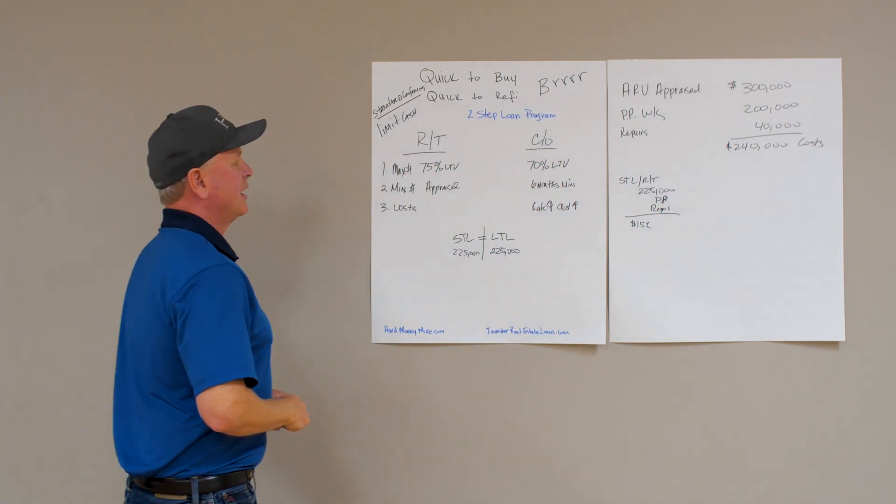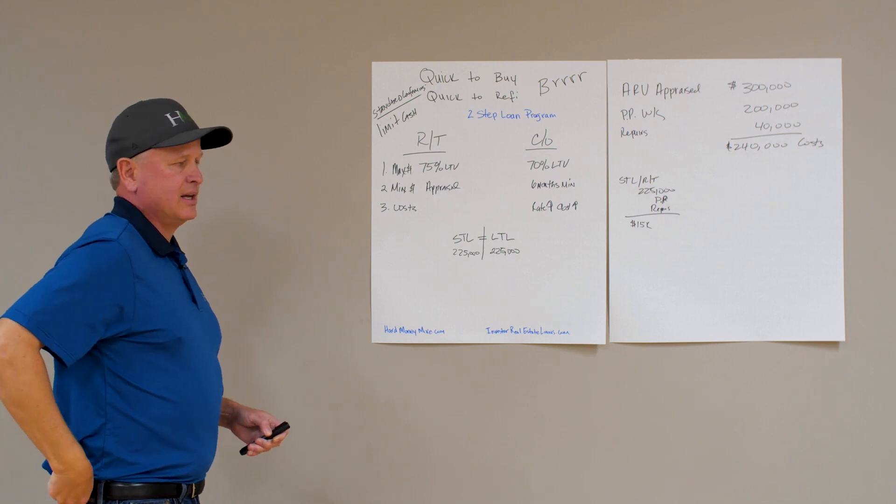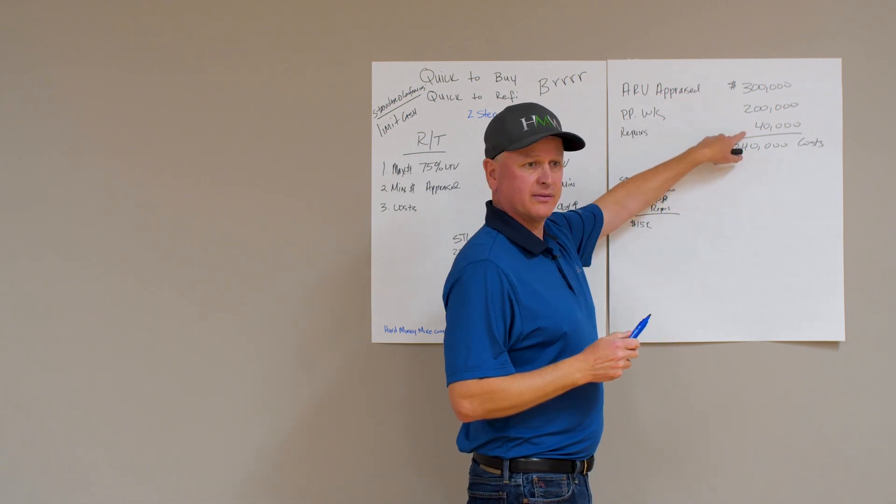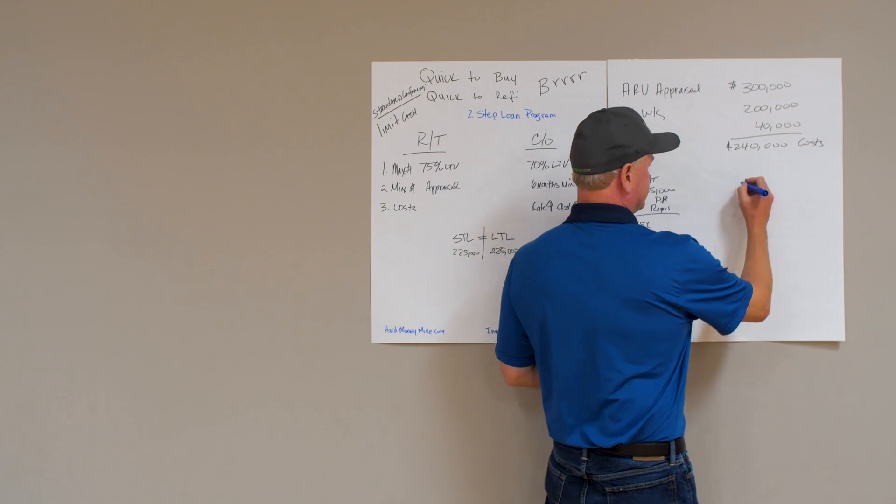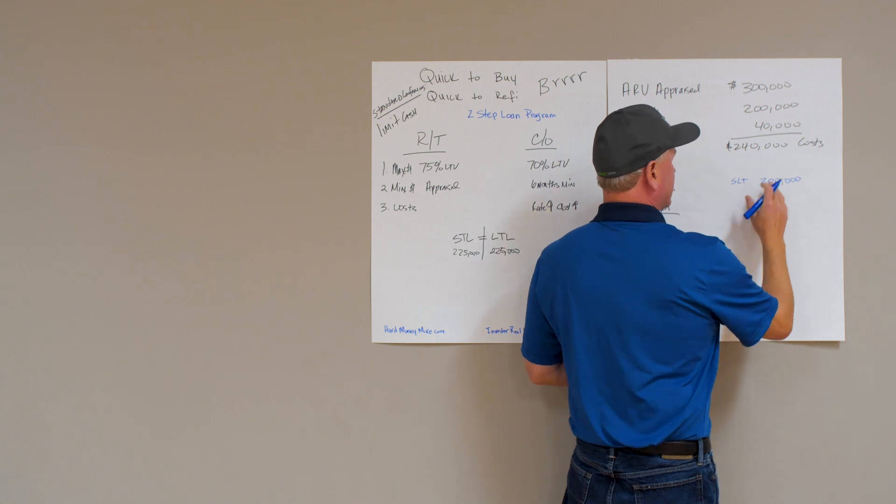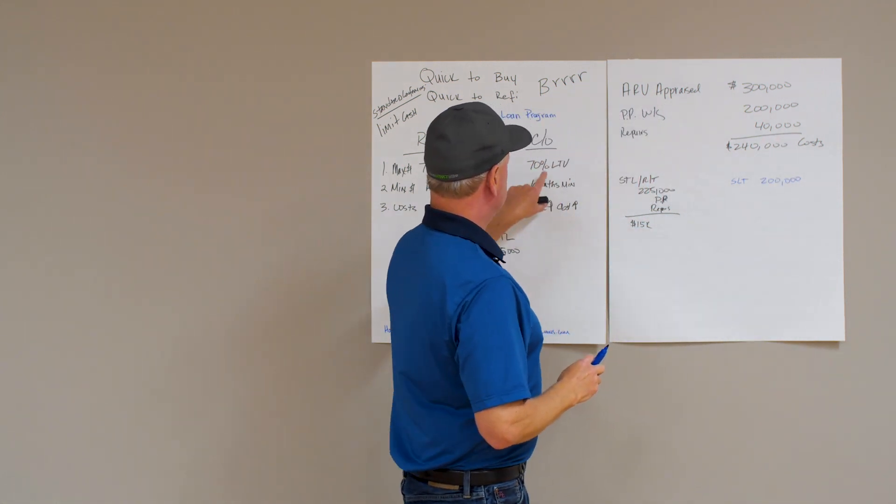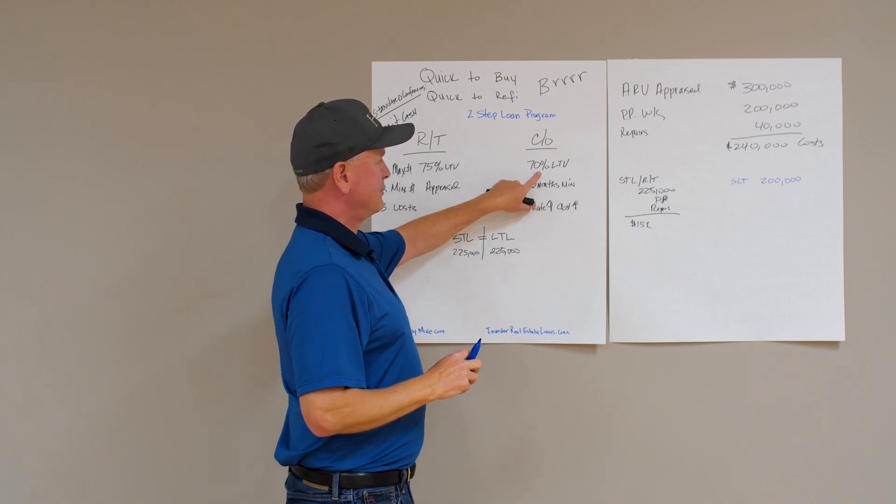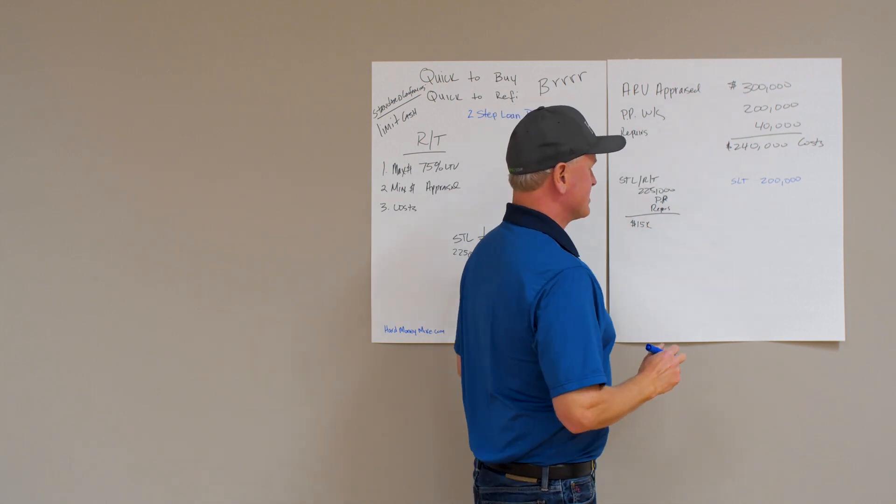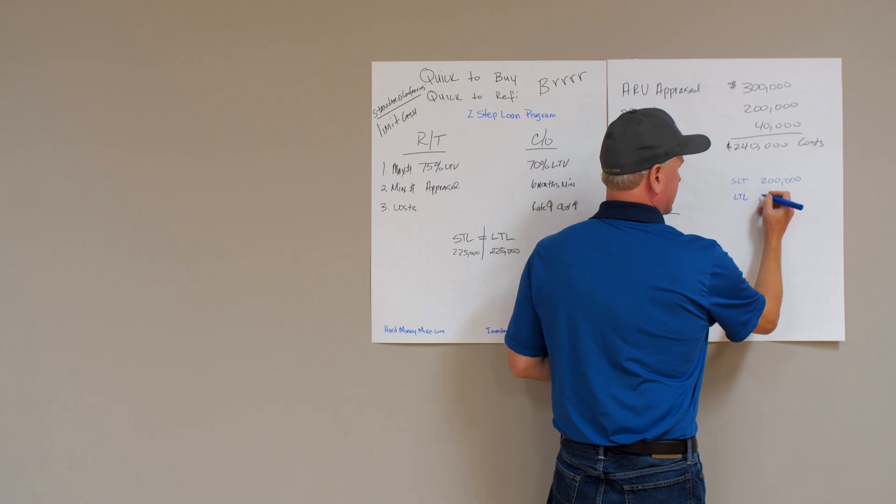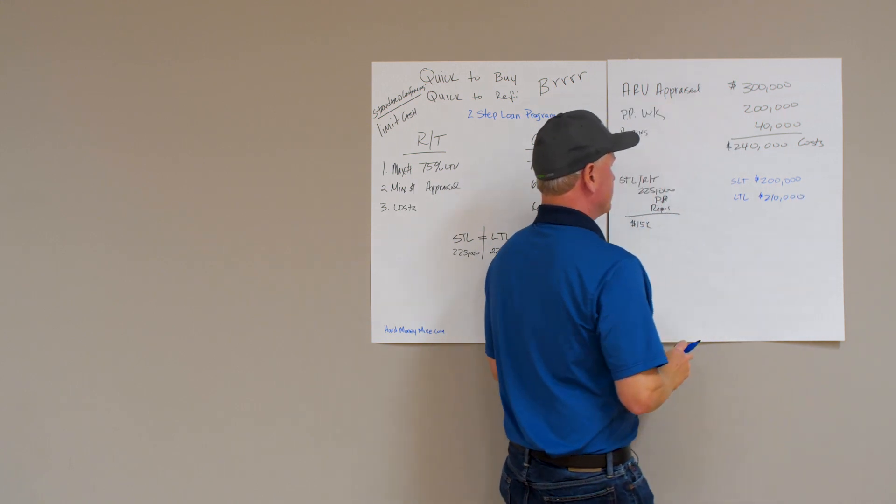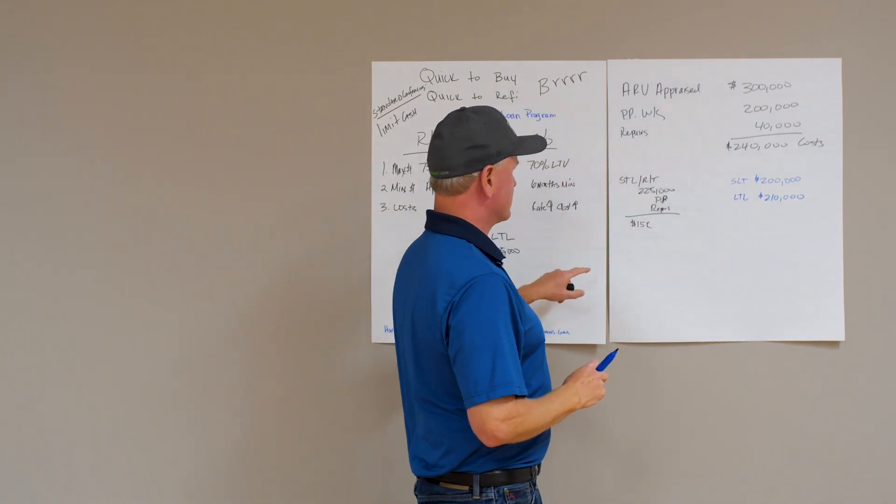Now let's look at an example of how we see these set up all the time. A common example is someone goes, I'll take out a loan for the purchase price but I'll cover the repairs. So they do a short-term loan for $200,000 and then they put in the $40,000 themselves. Since we're at cash out at 70% and we know our appraised value is $300,000, so 70% of $300,000 means our long-term loan is limited to $210,000.